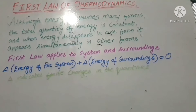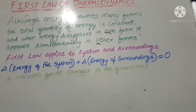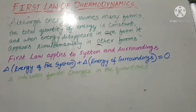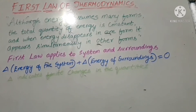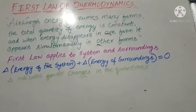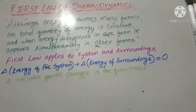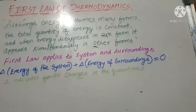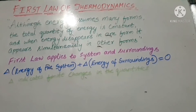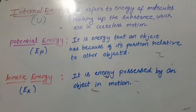This first law applies to both the system and surroundings, as we have already seen in the definitions. The generalized equation for the first law is: delta of energy of system plus delta of energy of surroundings is equal to zero. Here, delta indicates finite changes in the quantities of both system and surroundings, and their sum becomes zero.